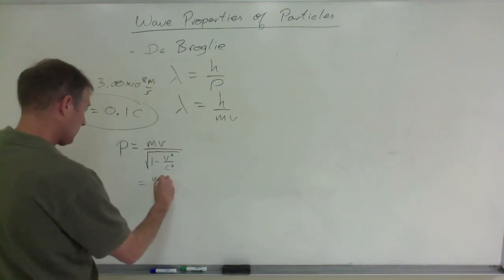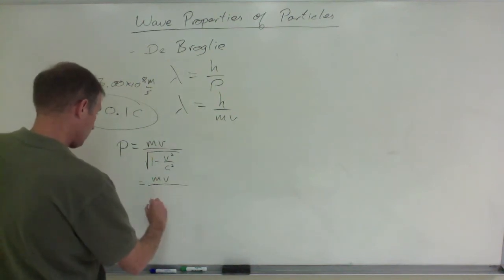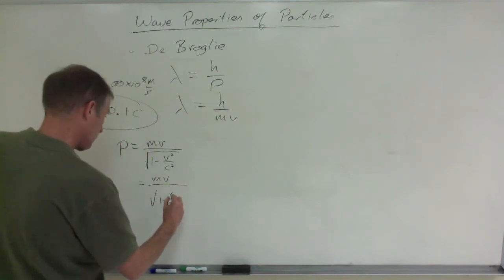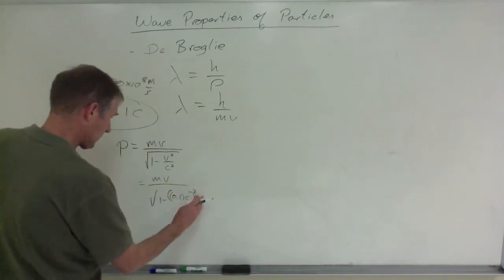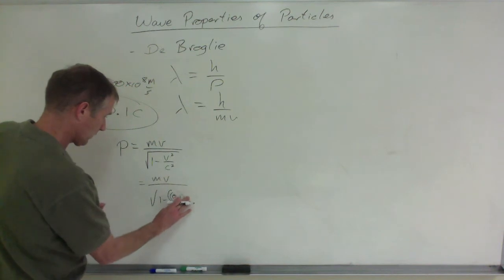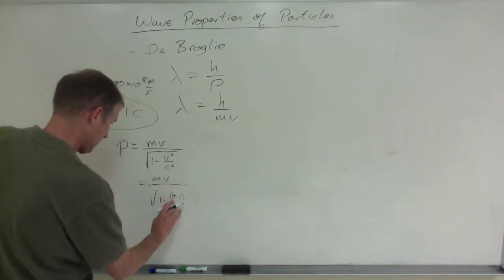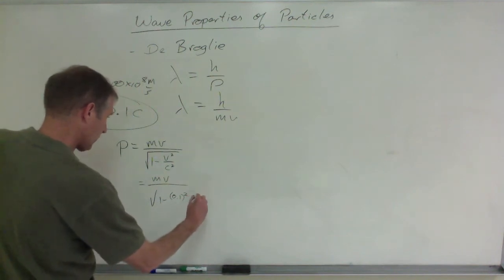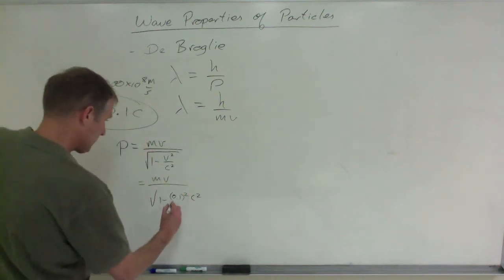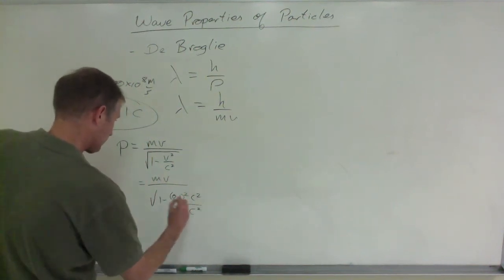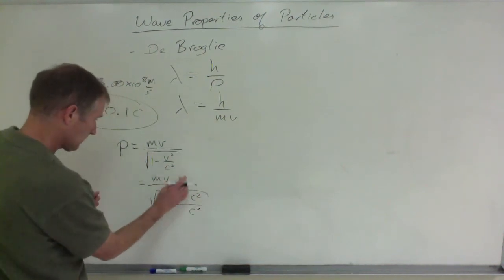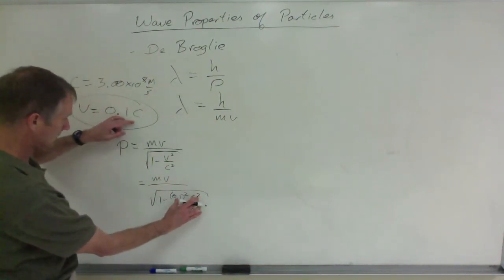You can find the denominator of this by doing m times v divided by the square root of 1 minus, and just put in parentheses 0.1 times c, all squared. Well actually, no, excuse me, 0.1 squared times c squared. It's that whole thing squared divided by c squared, so that cancels out, and here's your velocity 0.1c all squared divided by c squared.